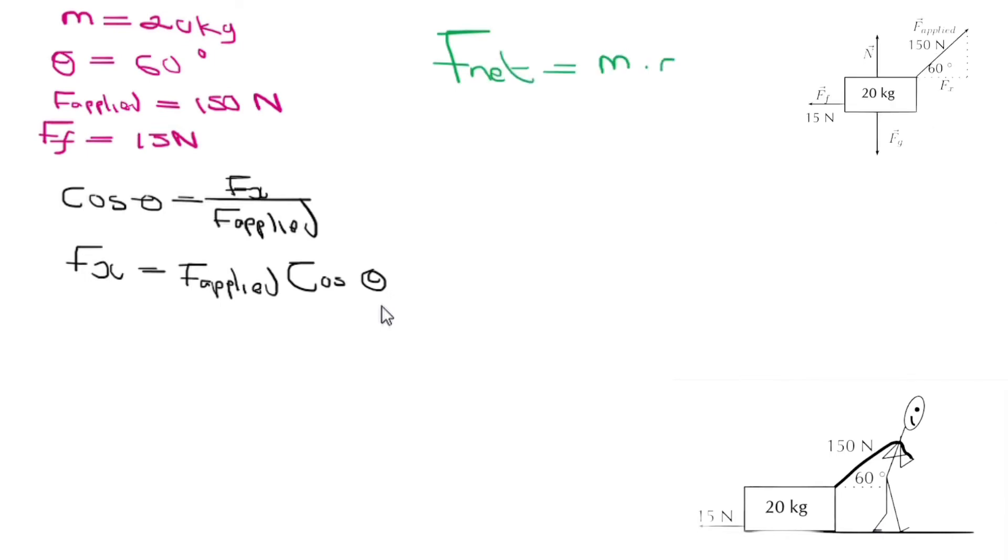Since the man is pulling the box using a rope and there's an angle, we therefore have to calculate the horizontal force which is Fx. Substituting into this equation here, you should get 75 newtons.